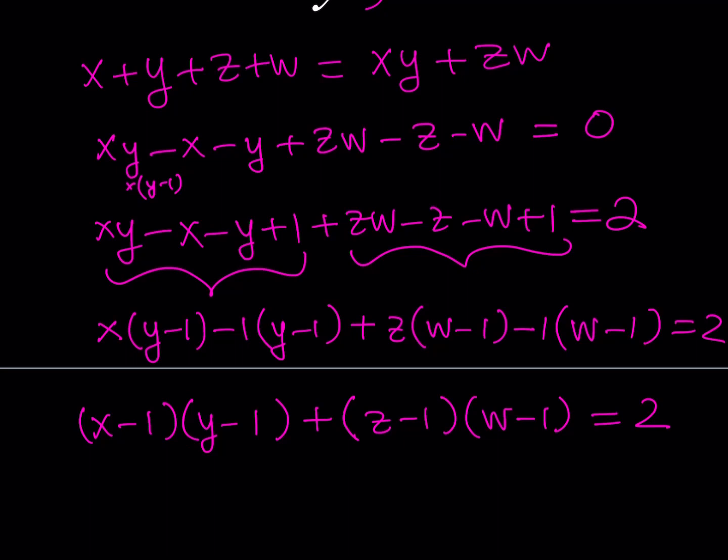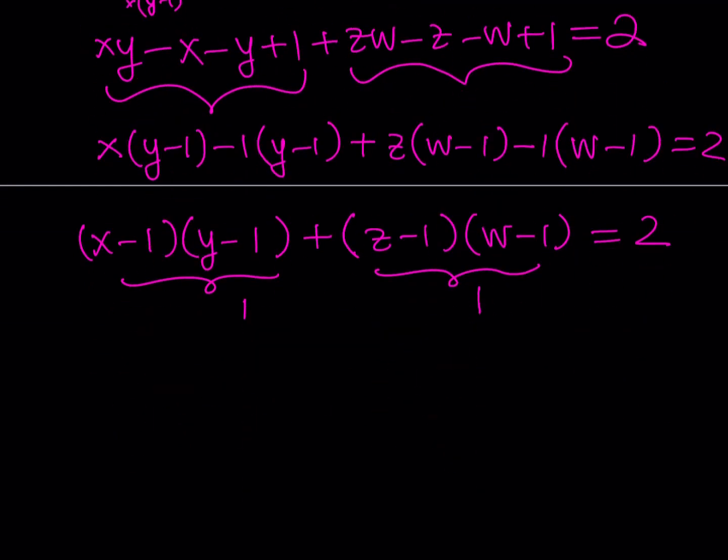And (z minus 1) and (w minus 1), that product is also an integer. So you're adding 2 integers, and they have to be positive integers, and their sum is 2. How is that possible? Well, it's possible if you set this equal to 1 and you set this equal to 1, or if one of them is 2 and the other one is 0, or the first one is 0 and the other one is 2.